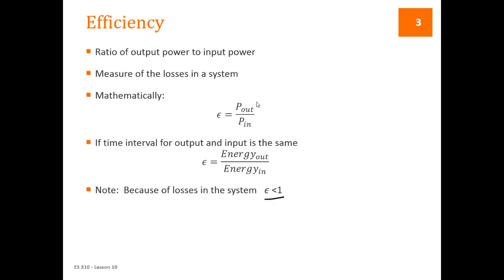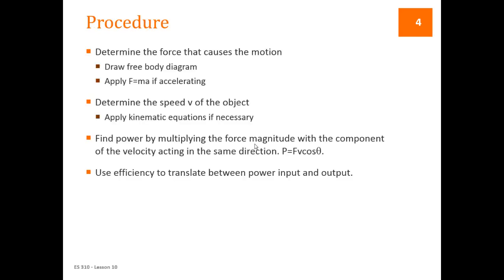So the power out is always going to be less than the power in. If we're looking at the same amount of time interval, then we can also write the efficiency as the energy out over the energy in, right? Because the relationship between power and energy is energy per time is power. So if the time is the same, then these give us the same relationships.